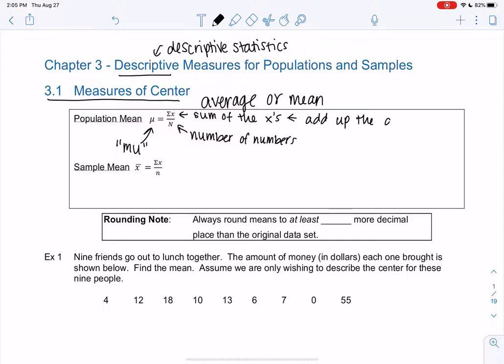So sum of the x's means just add up the data. We've probably all found an average before, just not with this fancy formula. We added up the data and divided by the number of numbers. Capital N will represent population size, because that'll be the number of numbers.